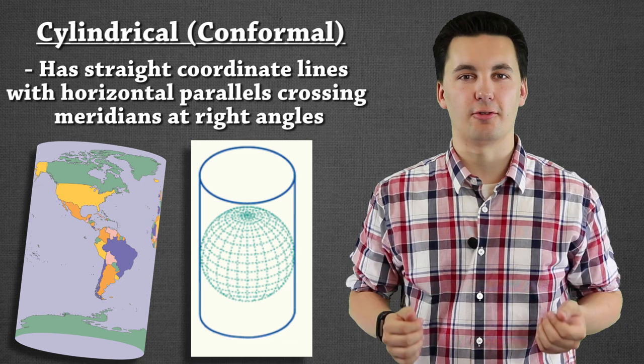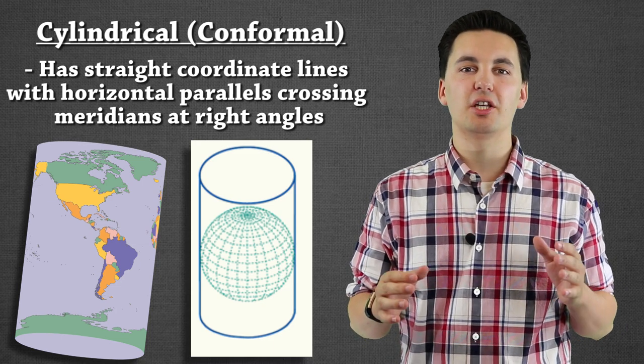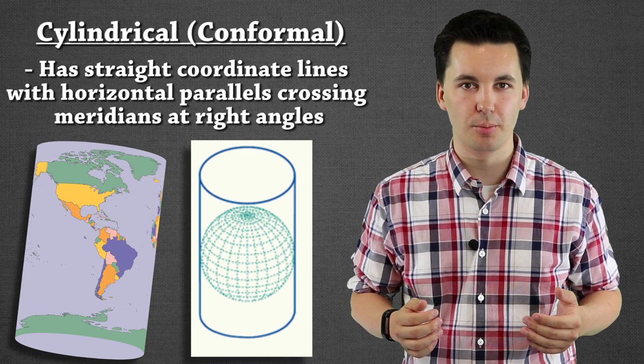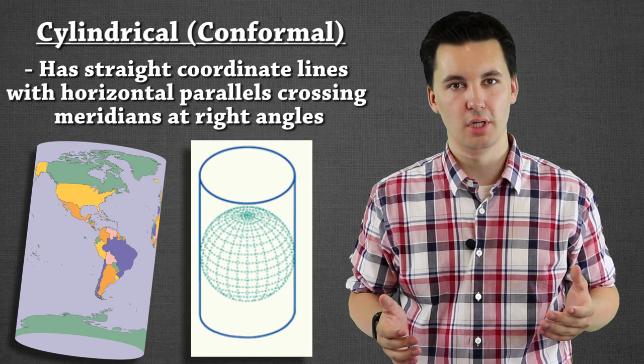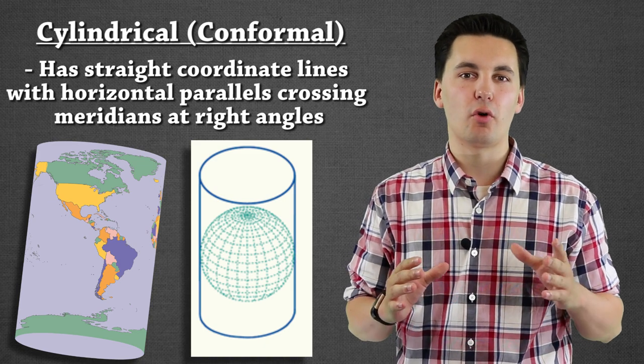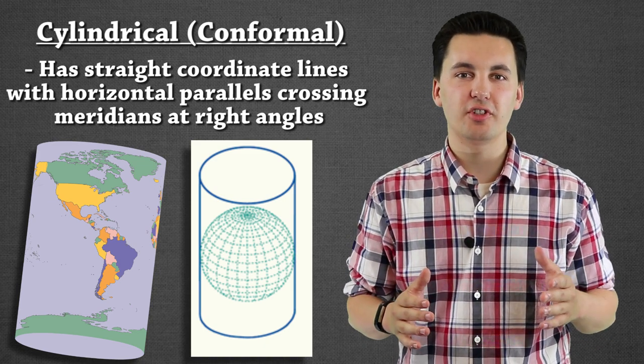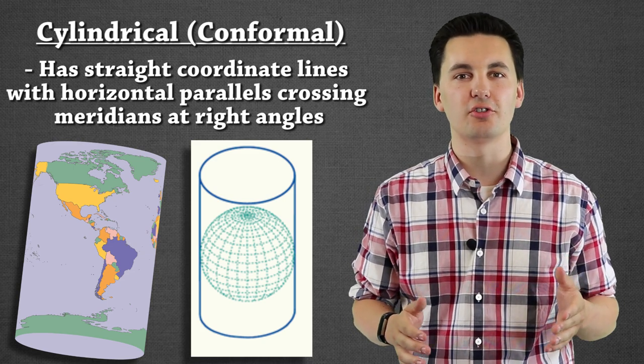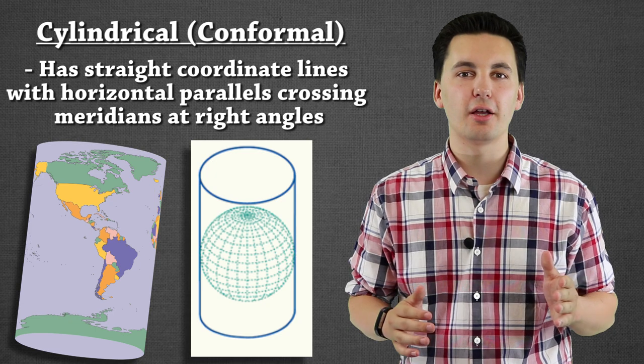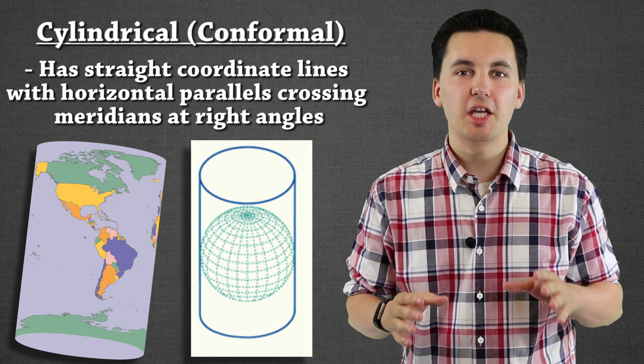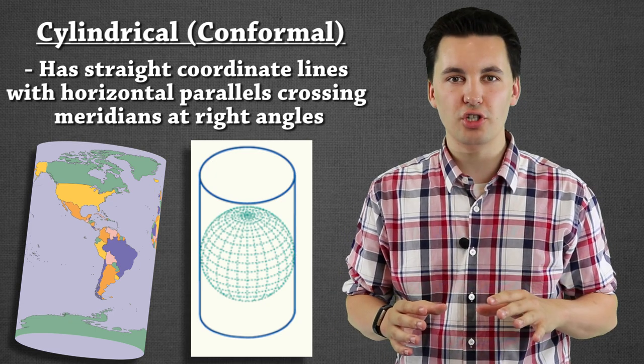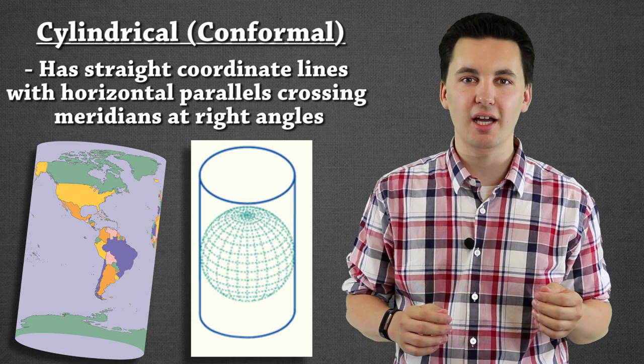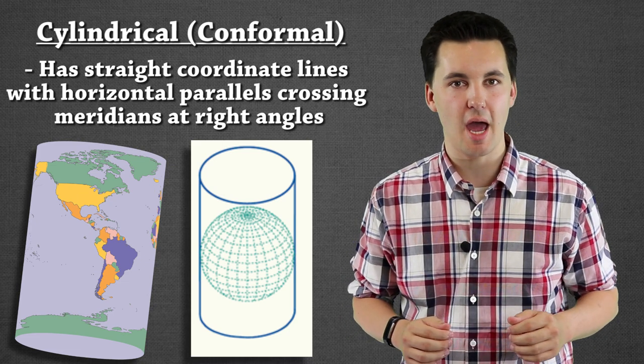Our first developable surface is a cylindrical one. Now this gets its name because it can be rolled up and put into a tube. It's also known as a conformal. Now this is often in the shape of a rectangle. Here we're going to see our scale stays pretty consistent throughout. Our lines of longitude and latitude are going to be straight with right angles crossing at the meridians. Here we're also going to see distortion occurring most between the size and also the location of our land masses.